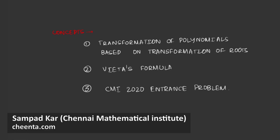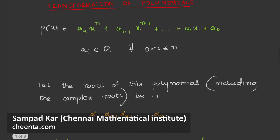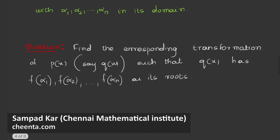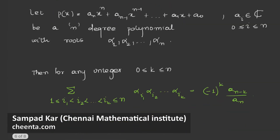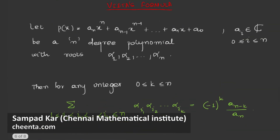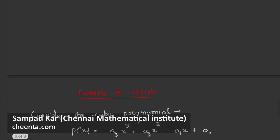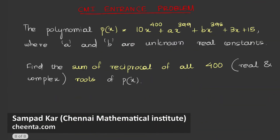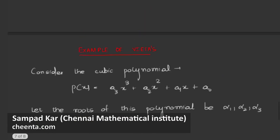Hello. Today we will be learning how to transform a given polynomial such that it preserves the transformation of roots. We will also be looking at the Vieta's formula, and in the end we will also be doing a CMI entrance problem. So let's start.